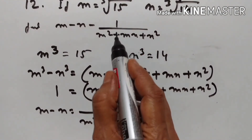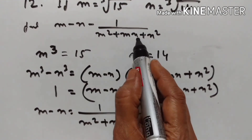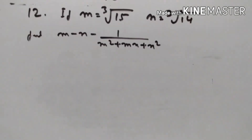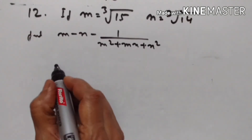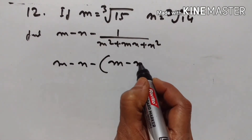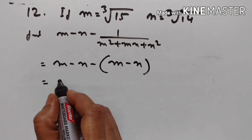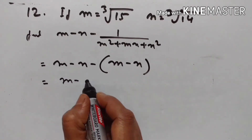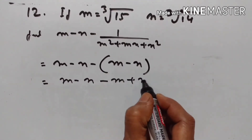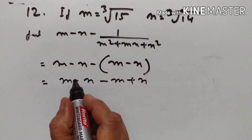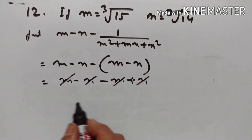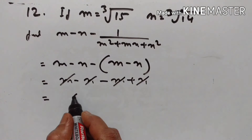So in place of 1 upon m squared plus mn plus n squared, I will substitute m minus n. This gives m minus n minus m minus n, which simplifies to m minus m equals 0 and minus n plus n equals 0. The answer is equal to 0.